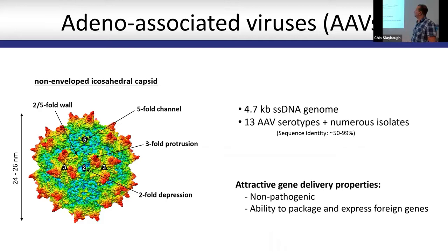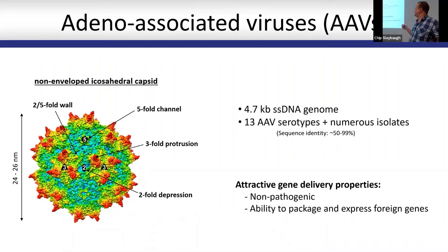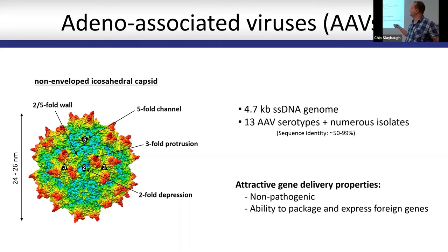The adeno-associated viruses are small, non-enveloped icosahedral viruses. They are packaged around a 4.7 kilobase single-stranded DNA genome. And there are certain AAV serotypes, but there are also numerous other natural isolate and engineered capsid variants where the sequence identity can vary between 50% to 99%.